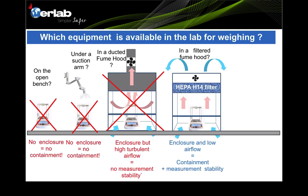Then comes the filtered fume hood, which is the preferred way. Why? Because it provides enclosure, it has low airflow — typically 0.4 to 0.6 meters per second. It provides containment, and at the same time, because of the smooth airflow and less turbulence, it basically provides a stable environment for weighing applications. So this is the preferred method.